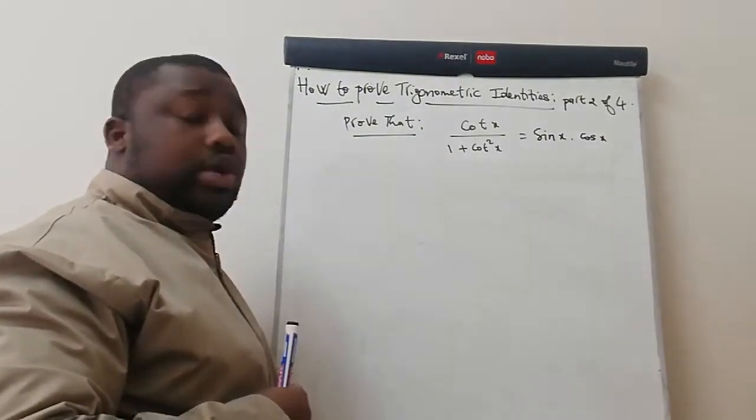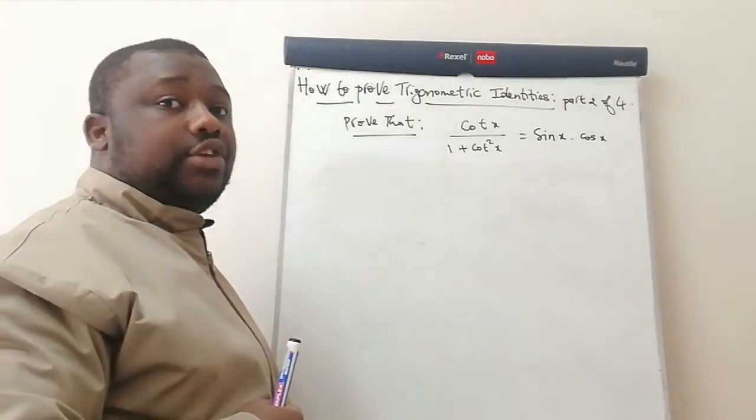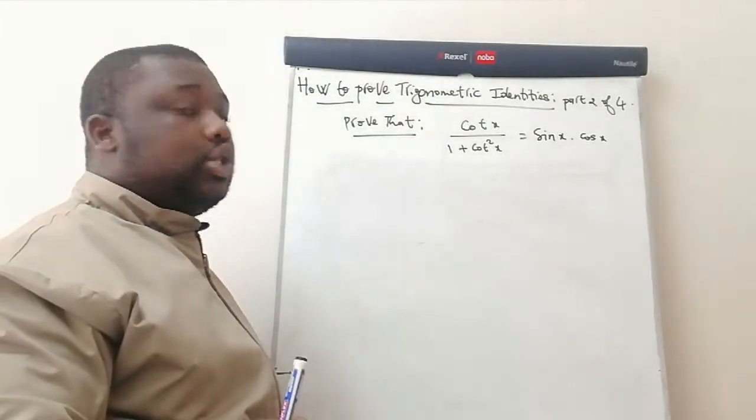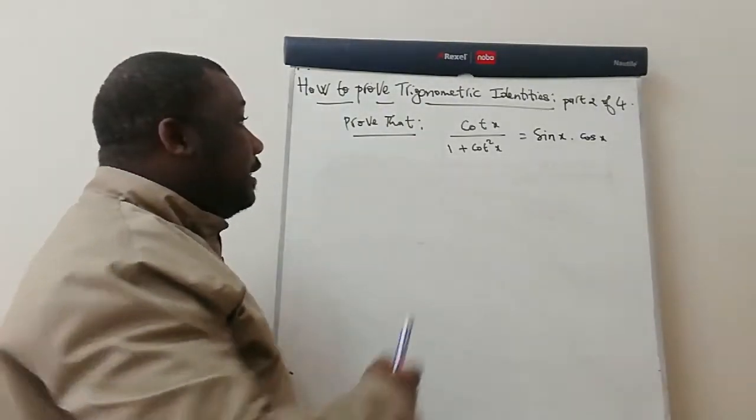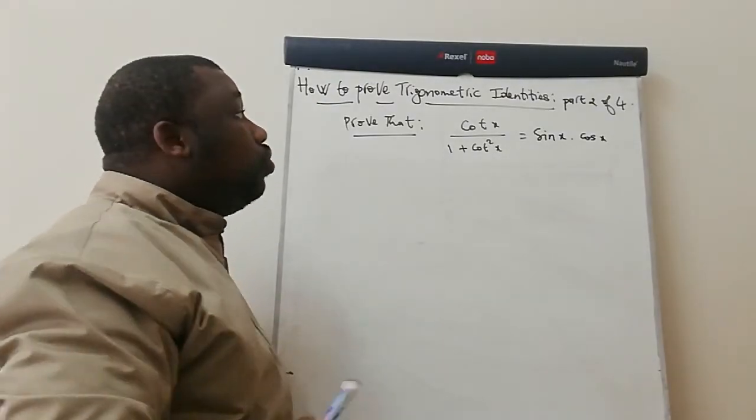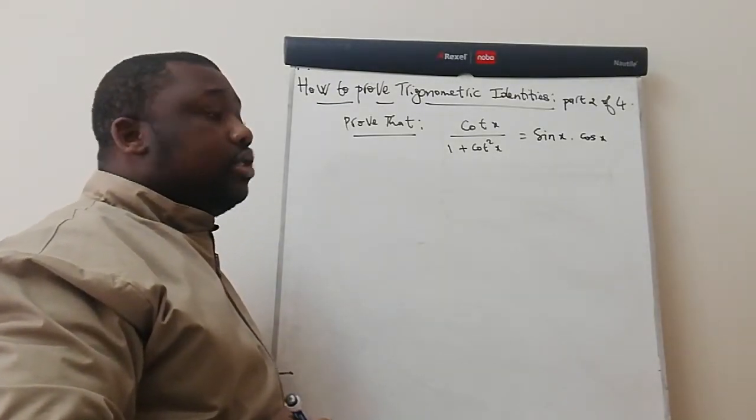Make sure you subscribe so that you don't miss none of these interesting videos and you can also be able to prove trigonometric identities. Today we're going to prove that cot x over 1 plus cot squared x is equal to sin x times cos x.